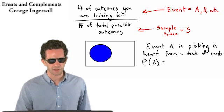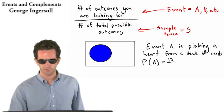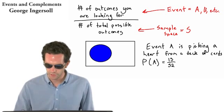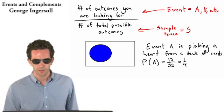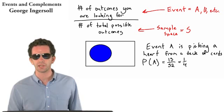And in this case, it's the number of outcomes we're looking for, that's 13, over the number of total possible outcomes. There are 52 cards in the deck, all of which we could possibly have drawn. This can be changed to one-fourth. So the probability of event A happening is 13 out of 52.